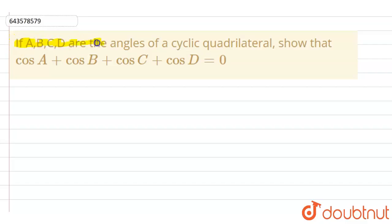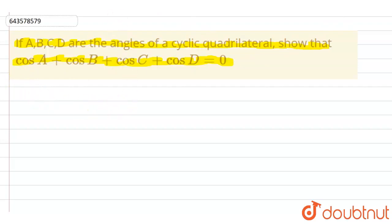Hello everyone. The question is: if A, B, C, D are the angles of a cyclic quadrilateral, then show that cos A plus cos B plus cos C plus cos D equals to zero.